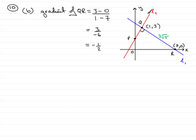Now we need to get the gradient of L2. And I said to you that if you have perpendicular gradients, the perpendicular gradient is the negative reciprocal of this. So the negative of this would be just a half. And then the reciprocal of it is 2. So the perpendicular gradients or the gradient of L2 would equal 2.